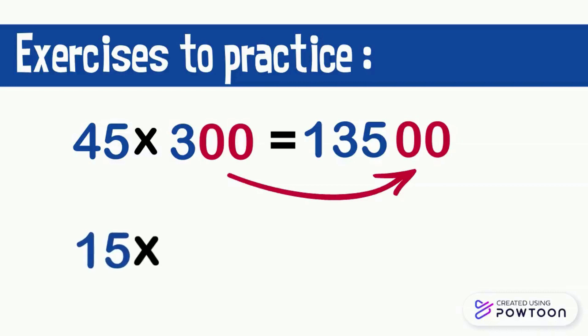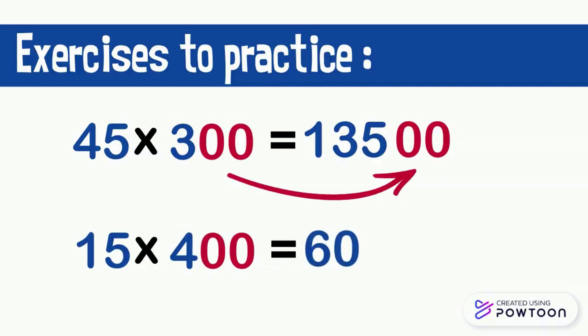15 times 400: first, we multiply 15 by 4, which is equal to 60. Then we put two 0s to the right, which is 6000.